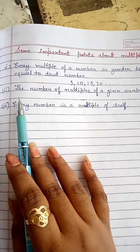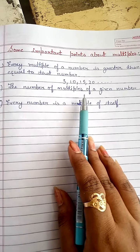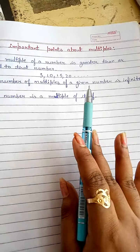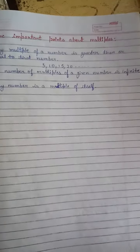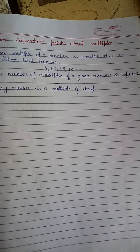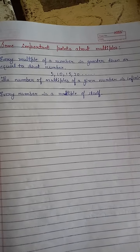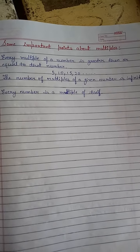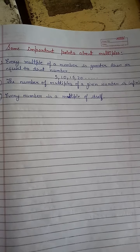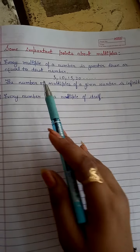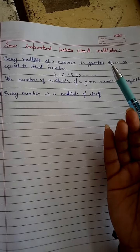The second point is: the number of multiples of a given number is infinite. Factors of any number are finite, but multiples are infinite because we obtain them by multiplying by counting numbers, and counting numbers — or natural numbers — are infinite. So we can obtain infinite multiples of any number.